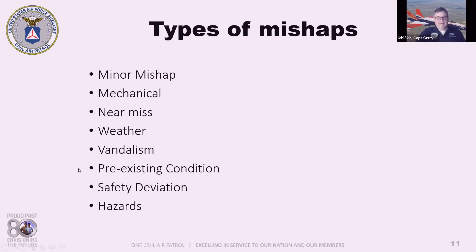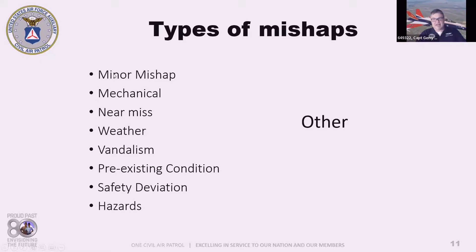Finally, there is the category of 'other' — any mishap that is a one-time occurrence, not identified as a human factor, and does not fall under any of the other mishap types. Honestly, I've been racking my brain and can't think of a mishap that can't be pigeonholed into one of the other categories, but if someone finds one, we put it as 'other.'